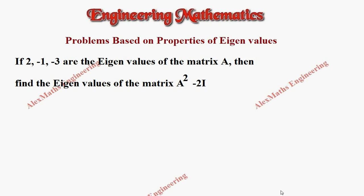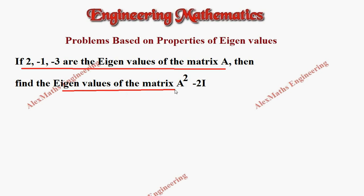Hi students, this is Alex. In this video we are going to discuss a problem based on the properties of the eigenvalues. If 2, minus 1, and minus 3 are the eigenvalues of matrix A, then we have to find the eigenvalues of the matrix A square minus 2I. We are going to use a property.